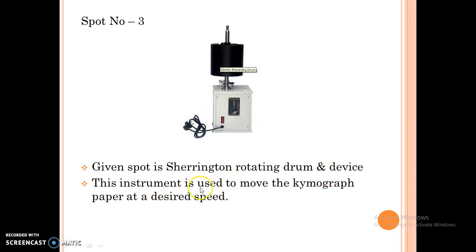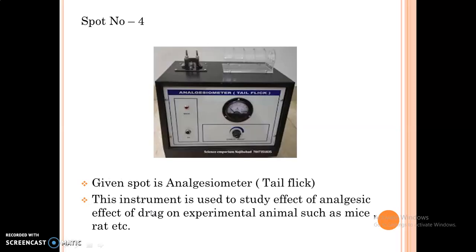The next spot is Sherrington rotating drum and device. This instrument is used to move the chemograph paper at the desired speed. The next spot is analgesiometer of tail flick method. This instrument is used to study the effect of analgesic drugs on experimental animals such as mice and rat, etc.